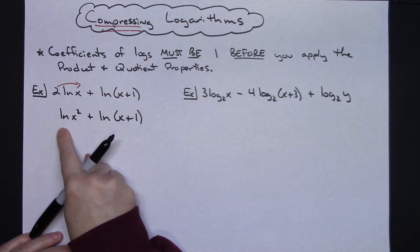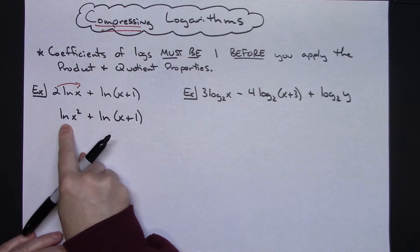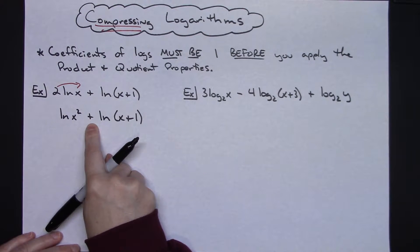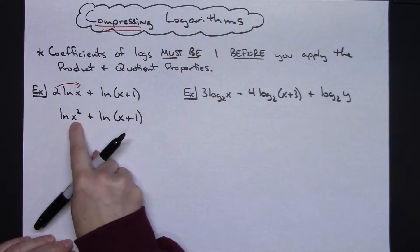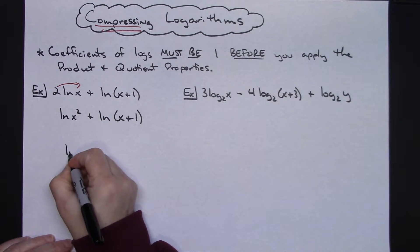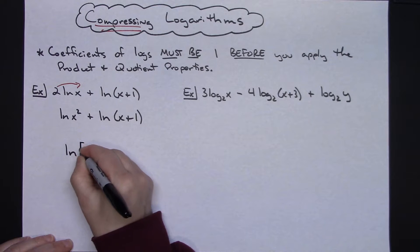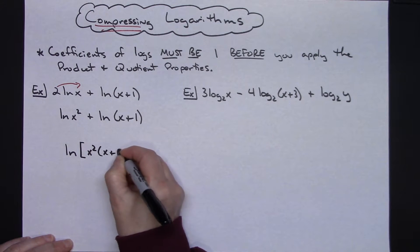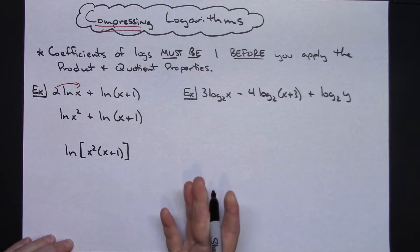Now I can take a look at this. I see two logs with the same base. Natural log has a base e so they both have the same base and they are being added, so then I can multiply these, writing them compressing them into a single log. So this would be the natural log of x squared times (x+1).